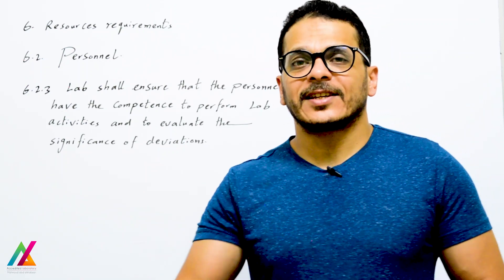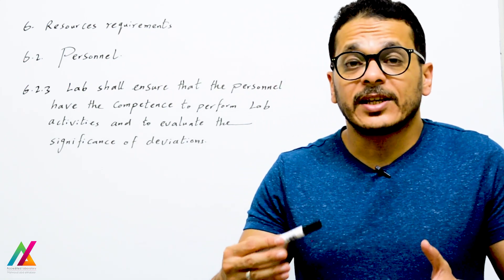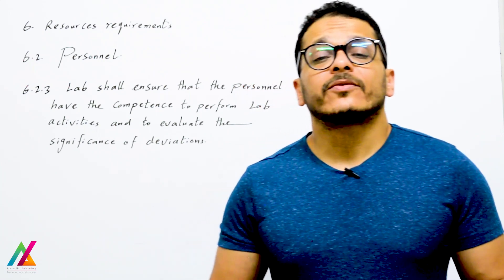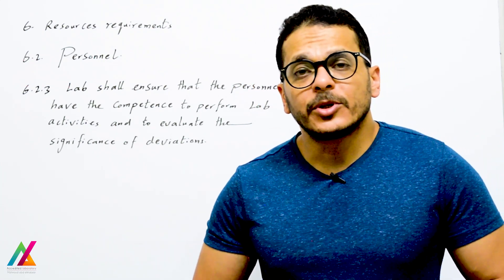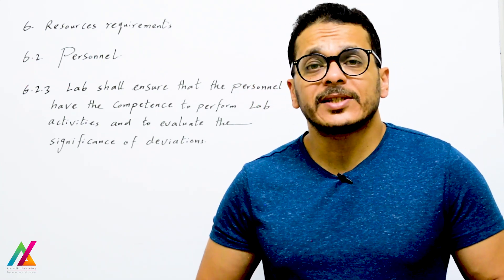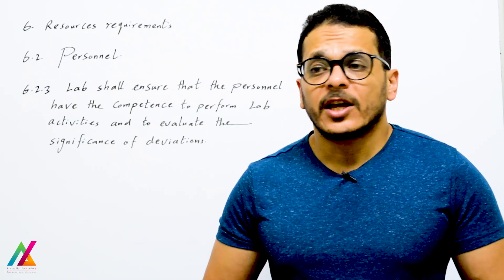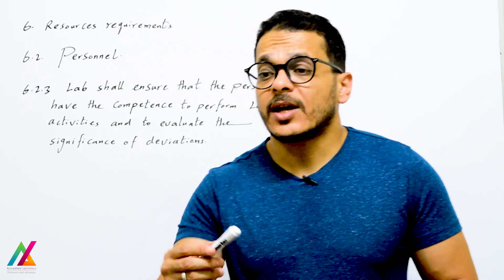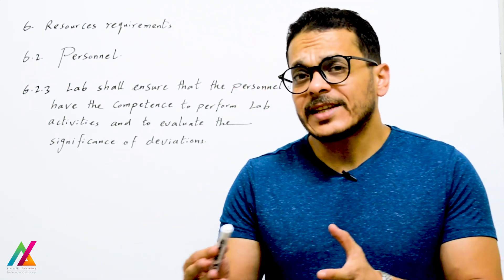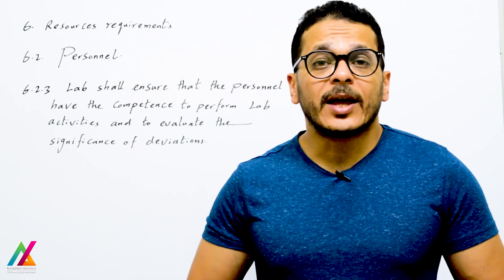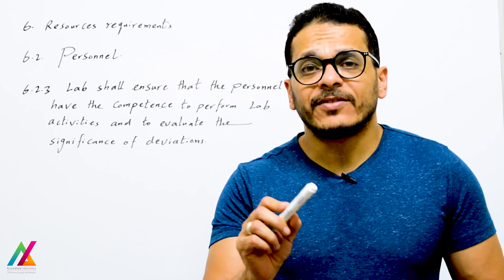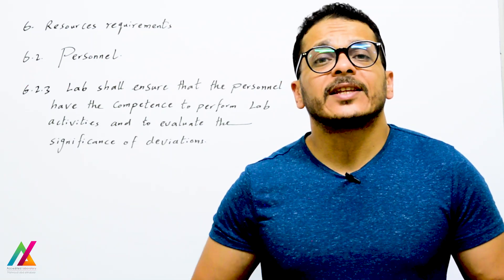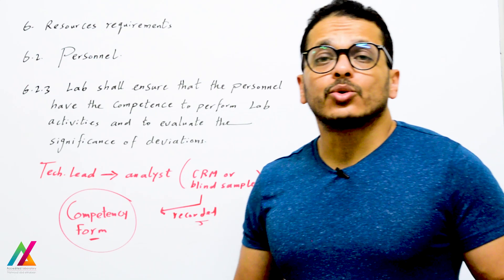If they apply any deviation to a method, they must be able to ensure that this deviation will not negatively affect accuracy but will improve it. The lab shall ensure competence especially for personnel who operate scientific equipment, perform testing and calibration, evaluate results, and develop and validate new methods — because these activities can affect the integrity of results.